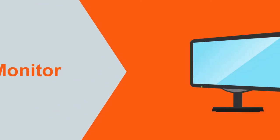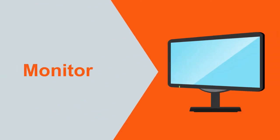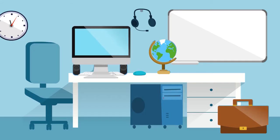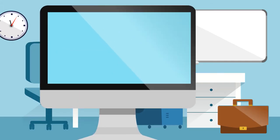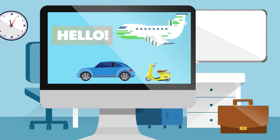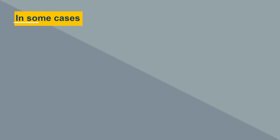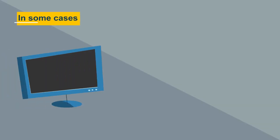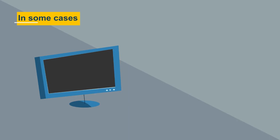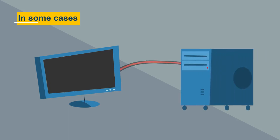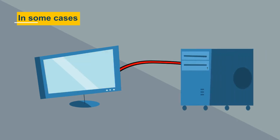The monitor, sometimes referred to as the display, is the part of the computer that displays output for users to view, like graphics and text. In some cases, the monitor is a separate piece that you must physically plug into your computer.